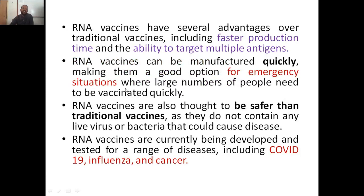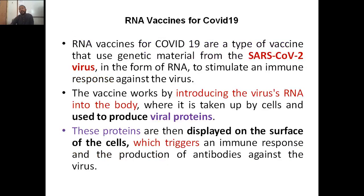RNA vaccines have several advantages: faster production time and the ability to target multiple antigens — meaning if you have infections from two or more pathogens, this vaccine can recognize multiple antigens simultaneously. They can be manufactured quickly, making them a good option for emergency situations where large numbers of people need to be vaccinated rapidly, as seen with COVID-19. RNA vaccines are also considered safer than traditional vaccines as they do not contain any live virus or bacteria.